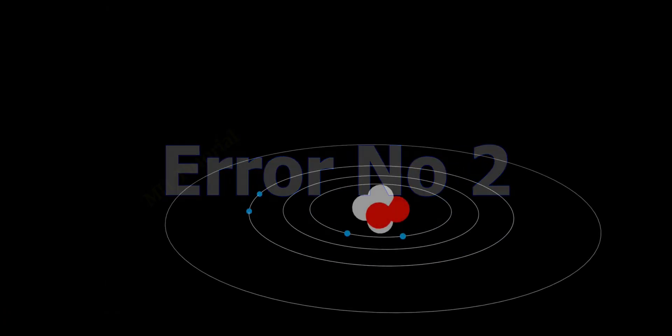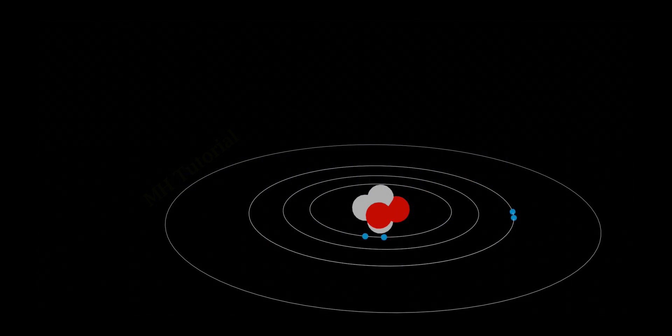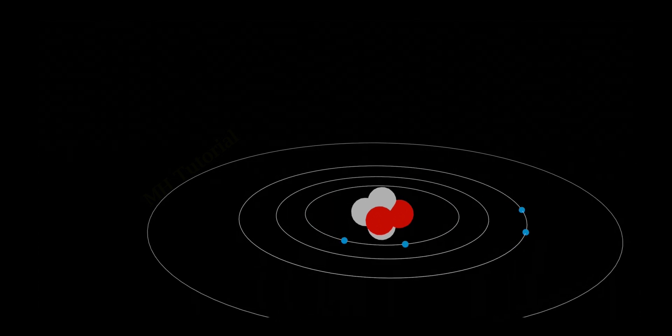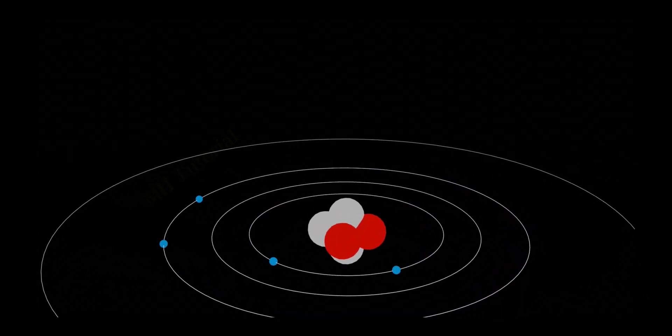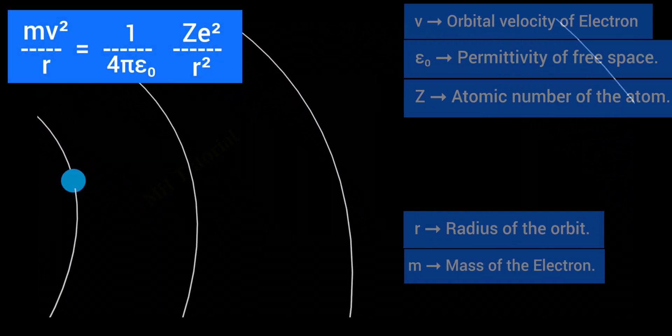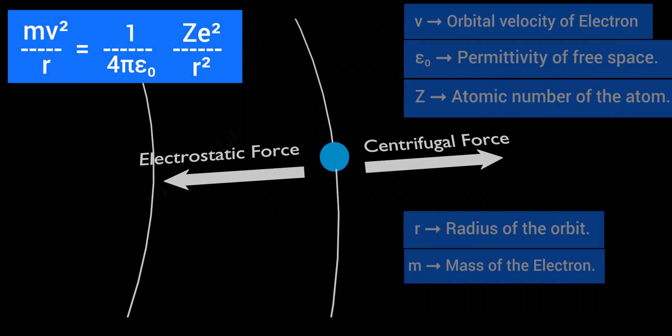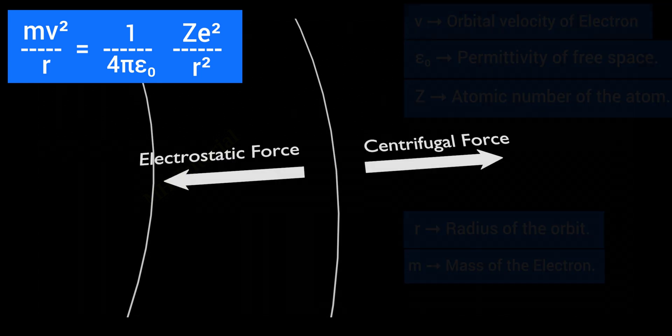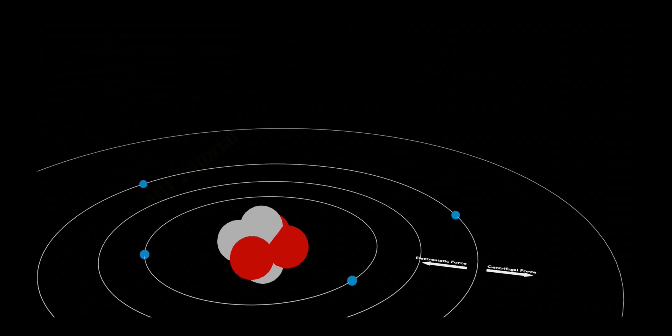Error number two. Perhaps the biggest failure in Rutherford's model is the stability of atom. Rutherford's atomic model could not explain a stable and long-lasting atom. It describes every electron to revolve the nucleus through a circular orbit, in such a condition that its centrifugal force remains equal and opposite to the electrostatic force between electron and the nucleus.